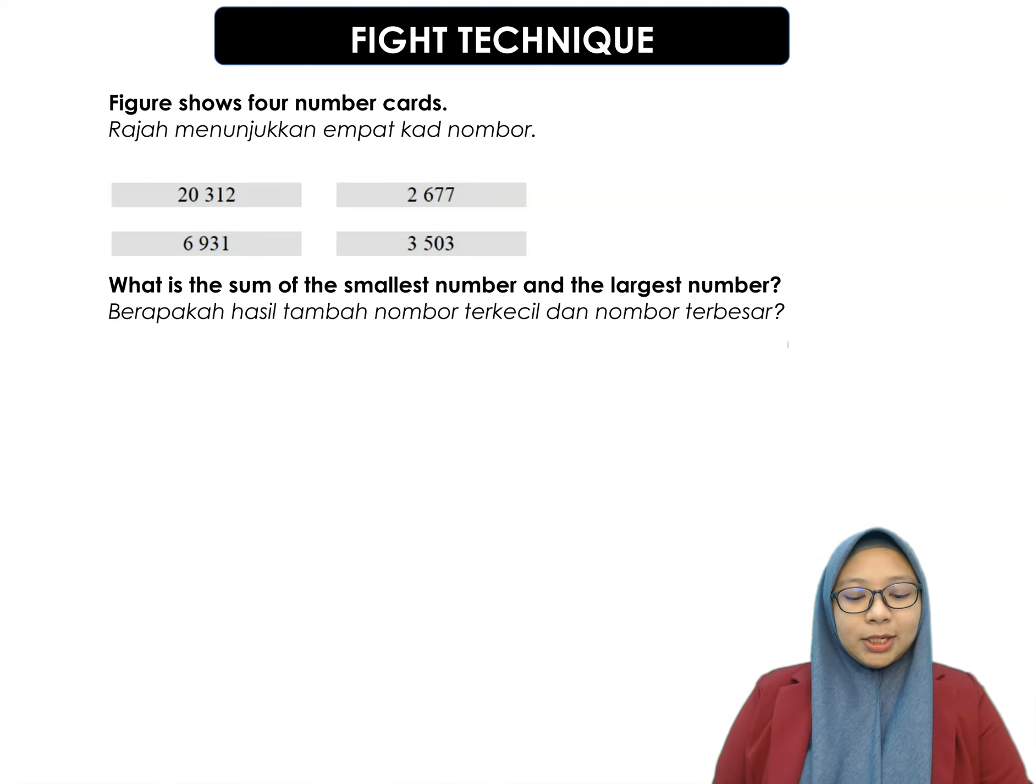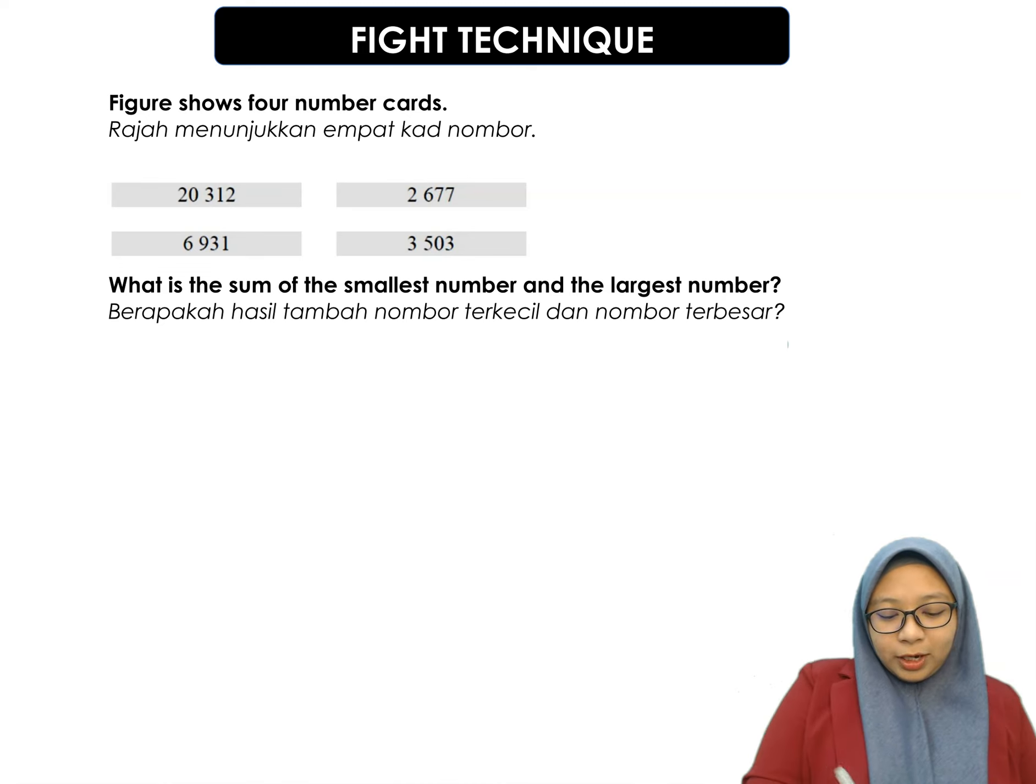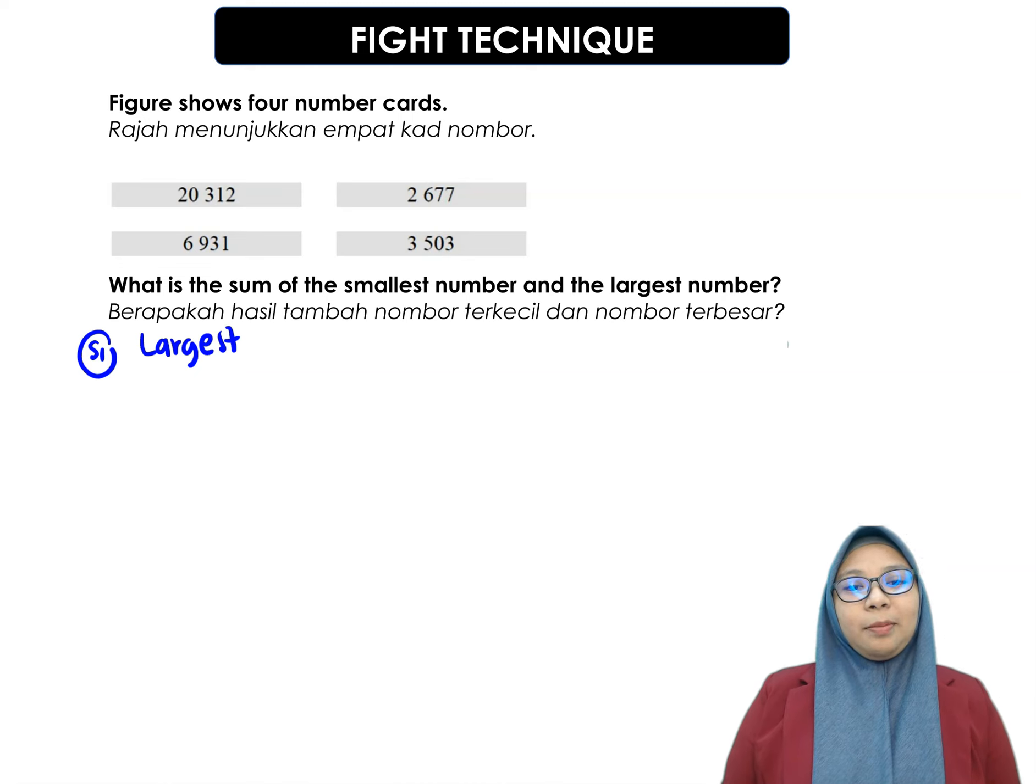So, what is the sum of the smallest number and largest number? So, first step, you have to find which one has the largest number, which one has the smallest number. So, for the largest number, first step, to find out which one has the largest number, you can use fight technique.